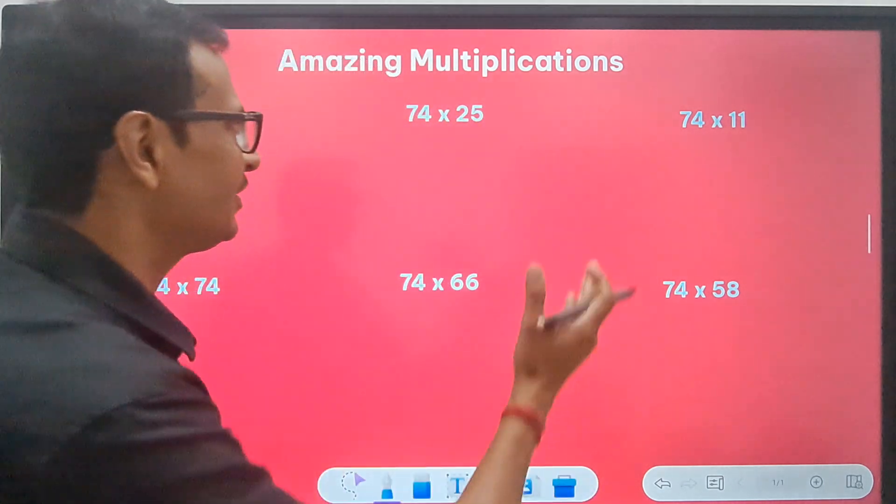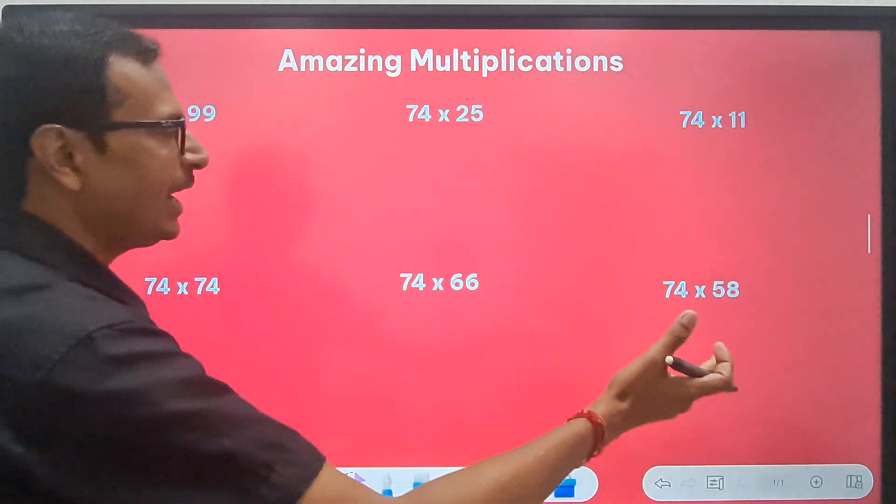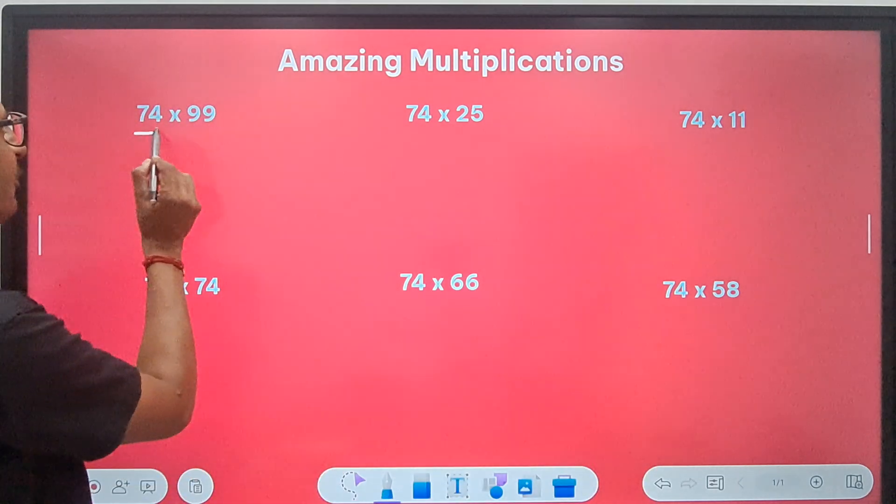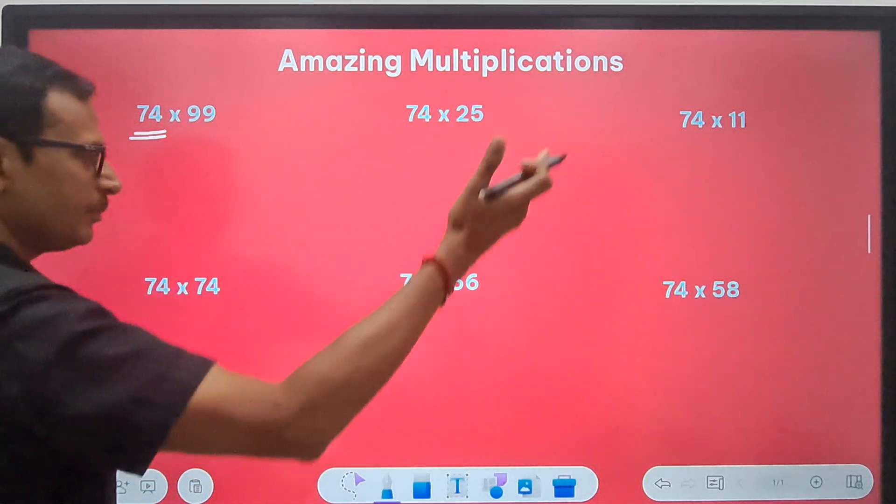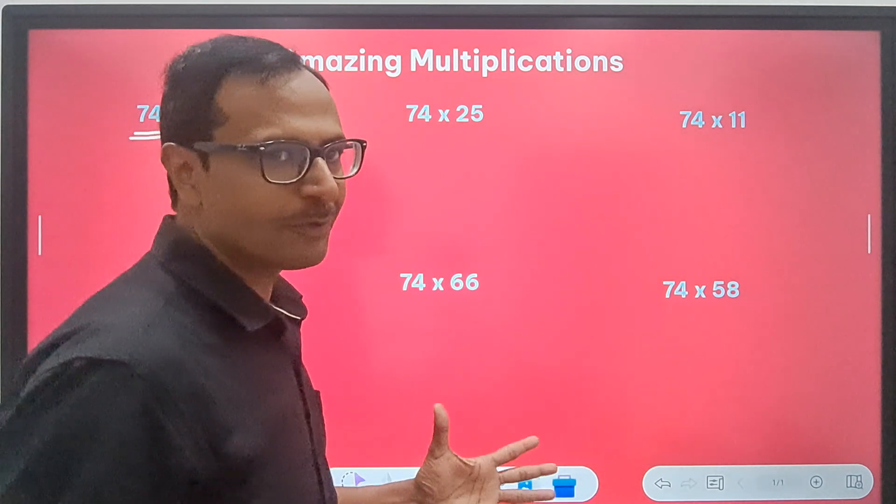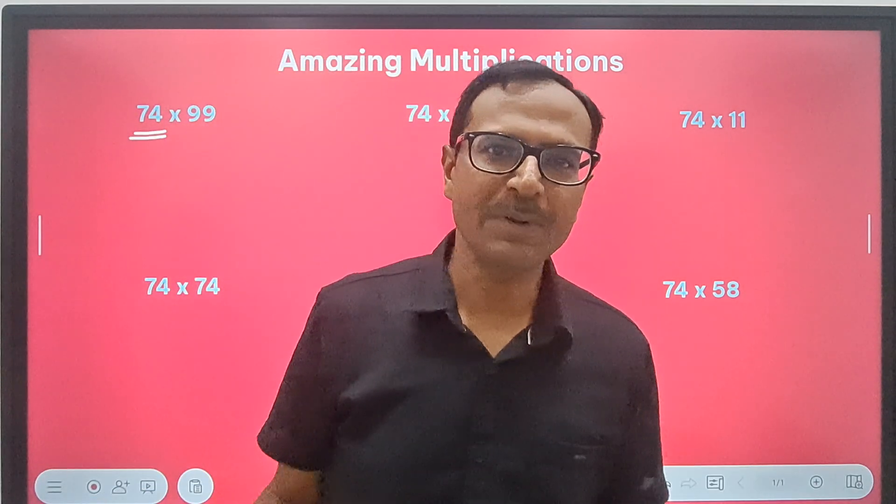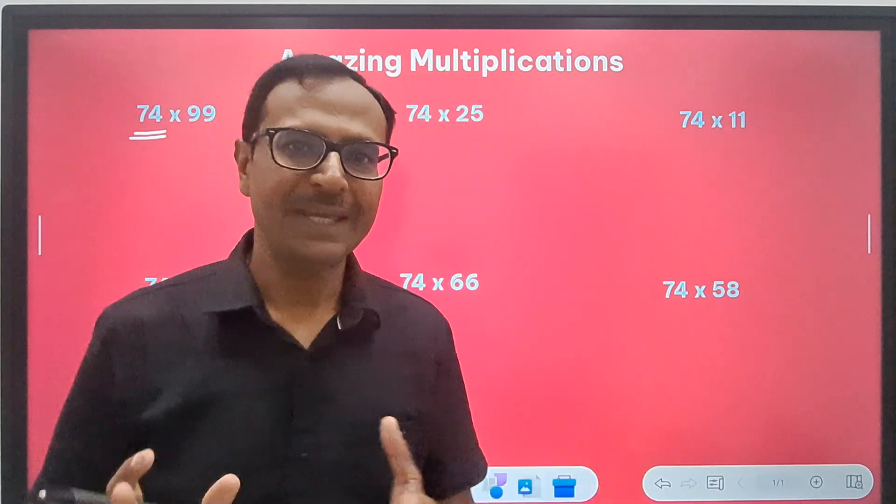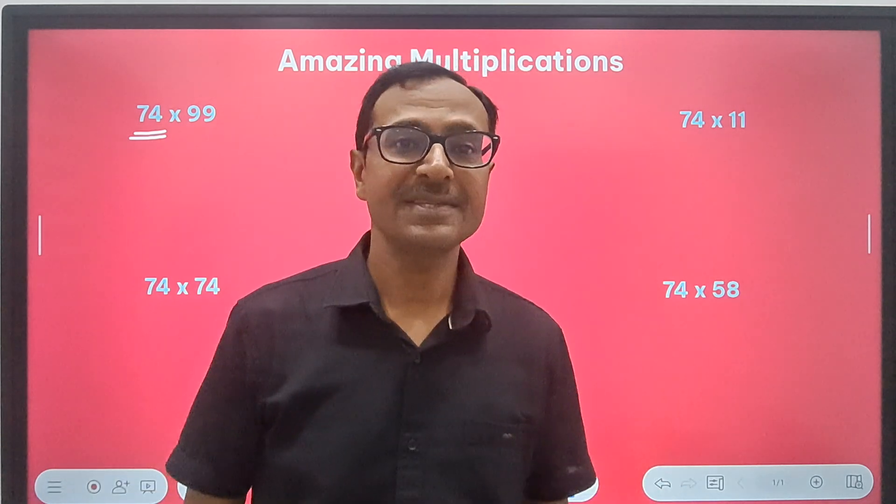We have six different problems written here and we are multiplying a number 74 by different numbers. Believe it or not friends, all the six problems which I am going to take up in this particular video has a different trick.